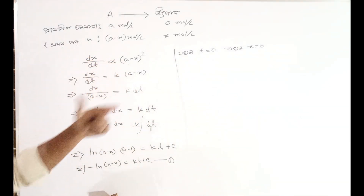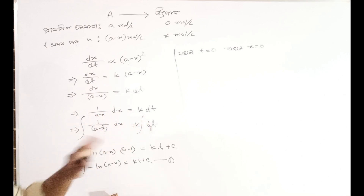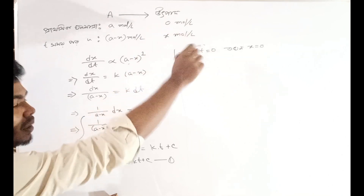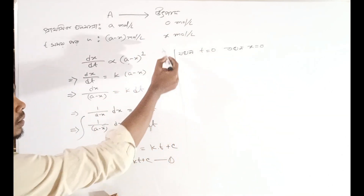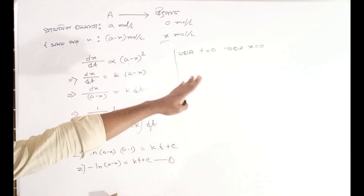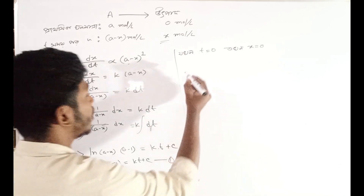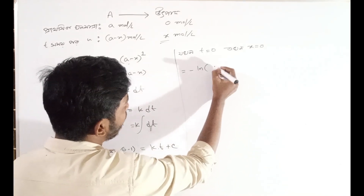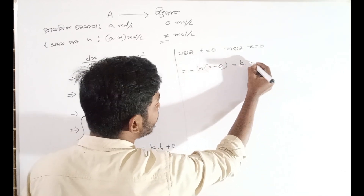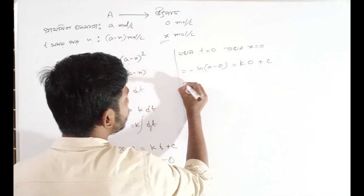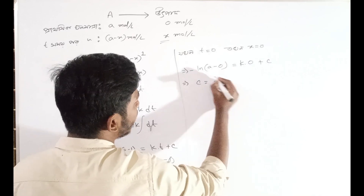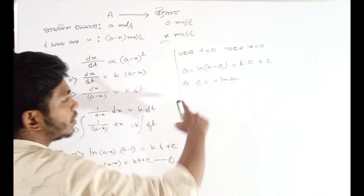That means when t = 0, x = 0. So substituting: minus ln(a minus 0) equals k into 0 plus C. So k into 0 is 0. Therefore C equals minus ln(a).